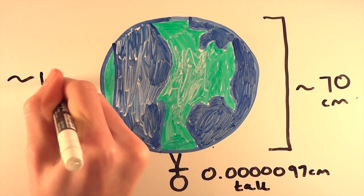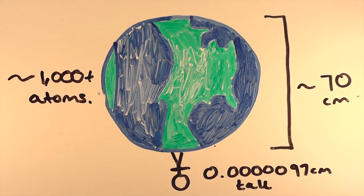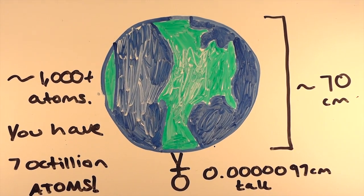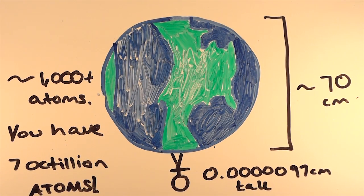You'd be made out of only a couple thousand atoms. That's a lot less than the 7 octillion atoms, or 7,000 quadrillion atoms, you have in your body right now. It really shows how big Earth is, but how small we are.